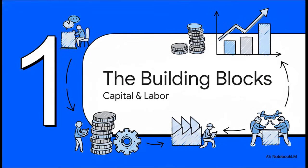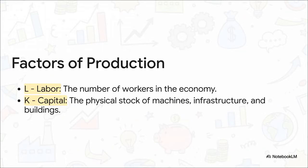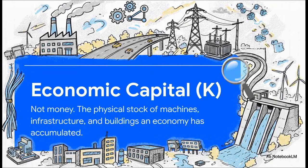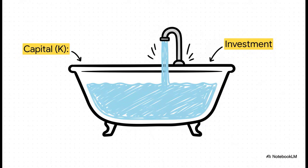To really wrap our heads around this, we need to start with the two basic building blocks of the whole thing: capital and labor. Every economy runs on two main things. You've got labor — that's all the people out there doing work. And then you have capital, which is not money. It's the actual physical stuff an economy uses to produce things: factories, roads, power grids, internet cables. It's the physical hardware of a nation built up over time. Capital is the stock — all the infrastructure a country has right now. Investment is the flow — the new stuff we add each year. So this year's investment becomes part of next year's capital stock.